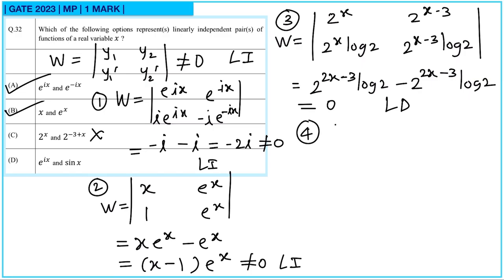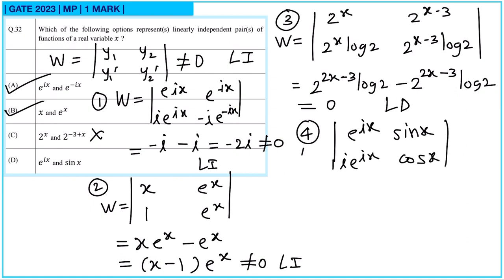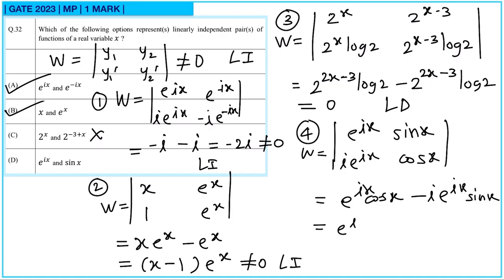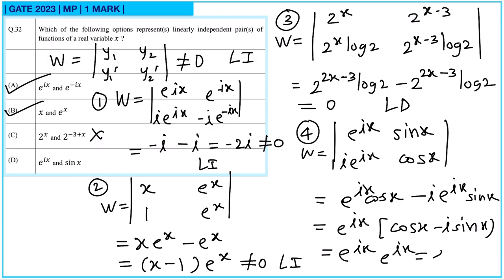For the fourth pair: e^(ix)·sin(x) and e^(ix)·cos(x). Computing the Wronskian gives e^(ix)·[cos(x) − i·sin(x)], and the result simplifies to e^(ix)·e^(−ix) = e^(2ix), which is not equal to 0. So it is linearly independent and option D is correct. Overall, options A, B, and D are correct.